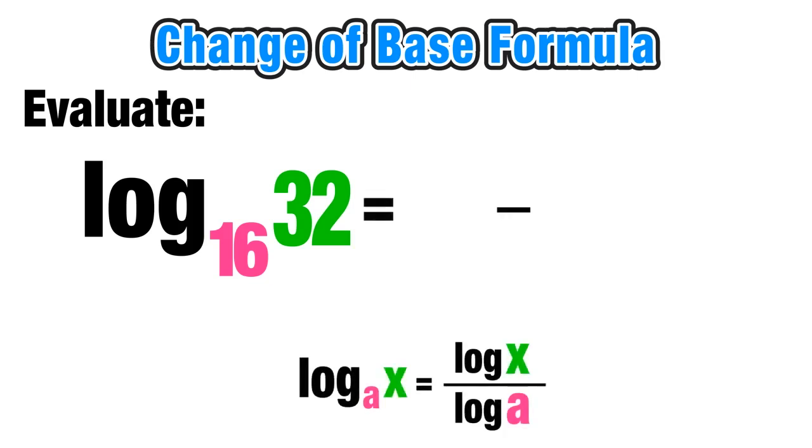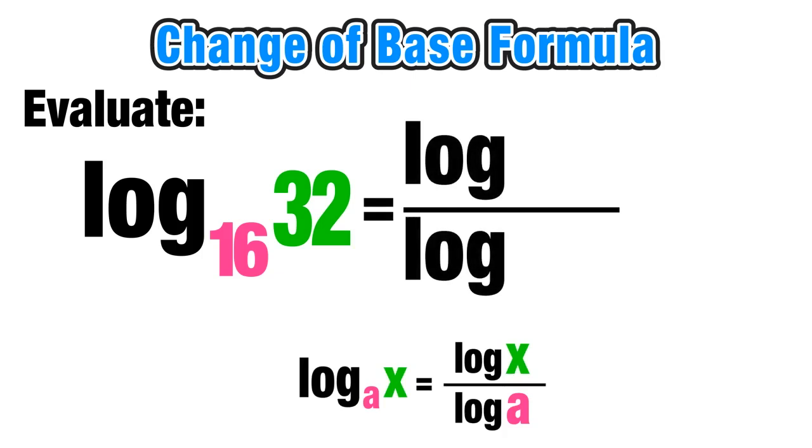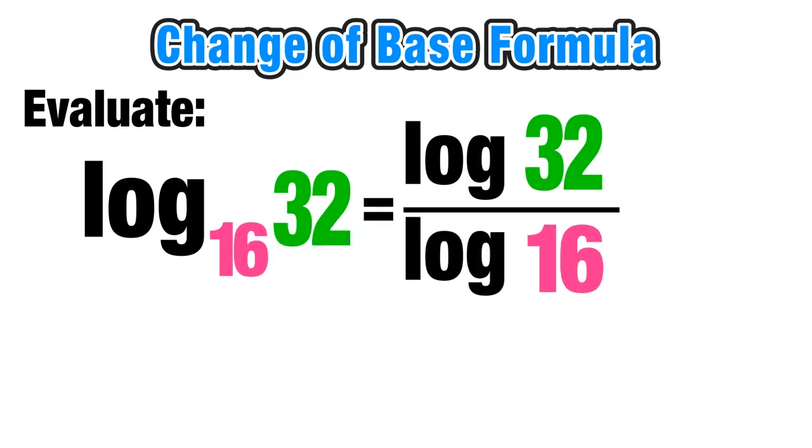Now again the base does not equal 10, so we can use the change of base formula here. All I have to do is rewrite this logarithm as a fraction: the numerator is going to be the log of x, in this case the log of 32, over the denominator, the log of a, the base, in this case the log of 16. And now I can just evaluate that: log of 32 divided by log of 16 using a calculator equals 1.25 or as a fraction is 5 over 4.